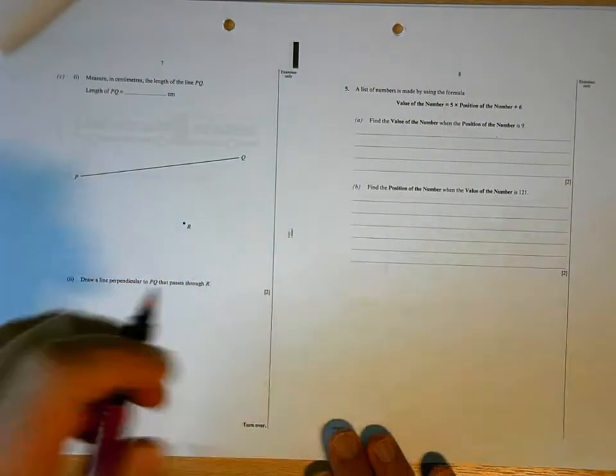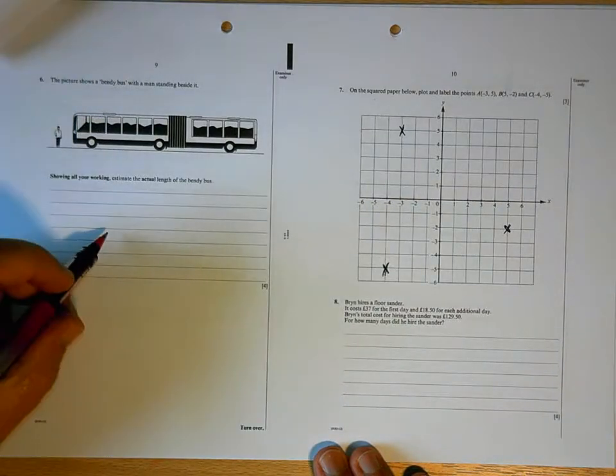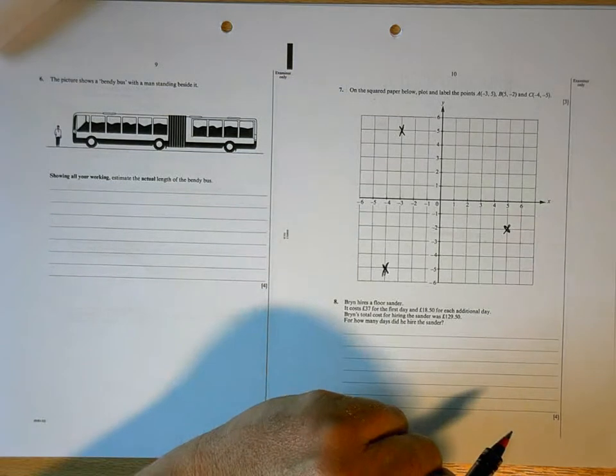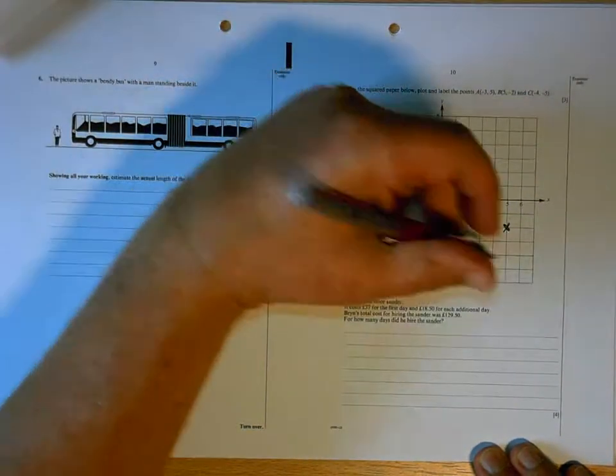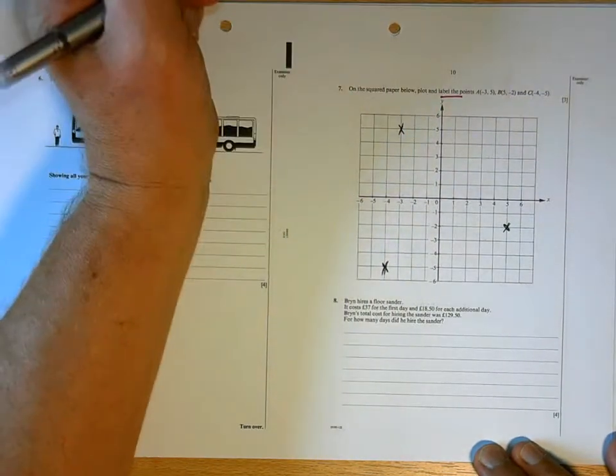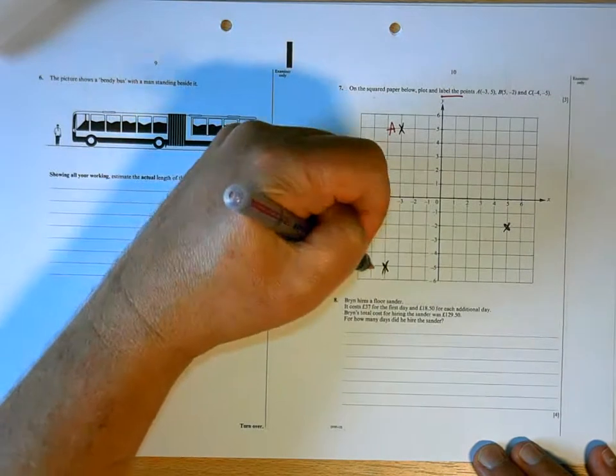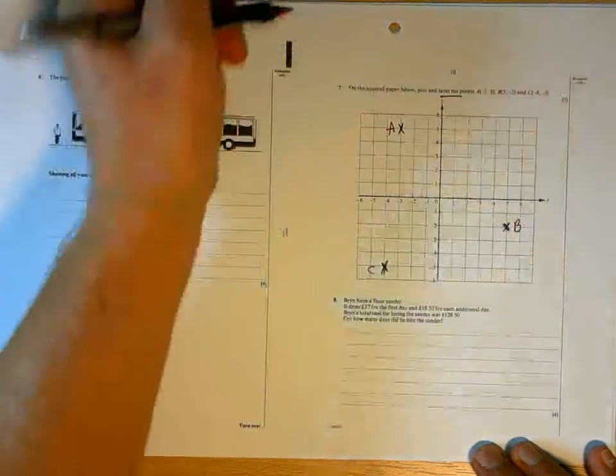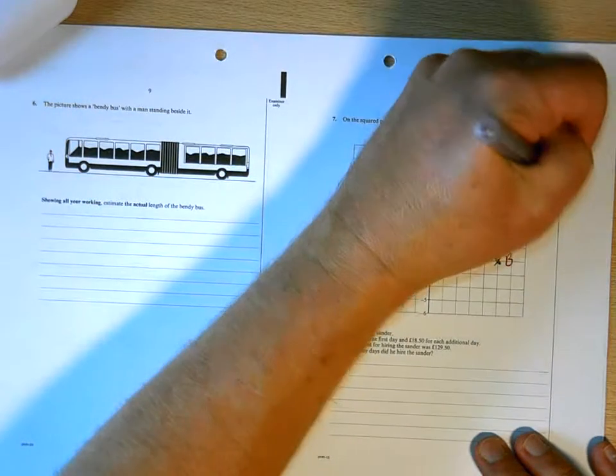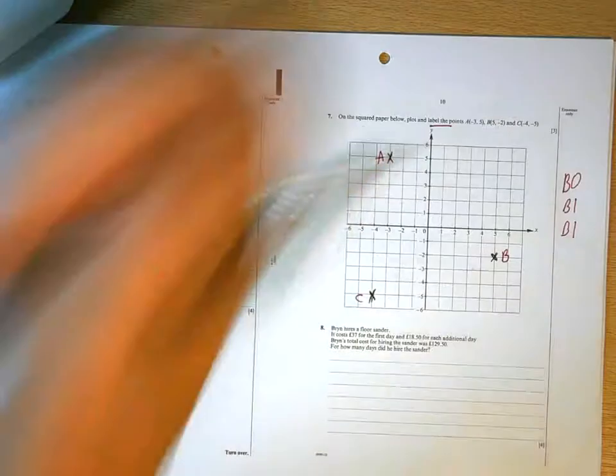You should be able to do things there. You should be able to do that. With this question, you need to tell me which of these points are which. Plot and label the points. That's point A. That's point C. That's point B. If you had just written those, you would get three marks. You're only going to get two out of the three because you haven't labelled.